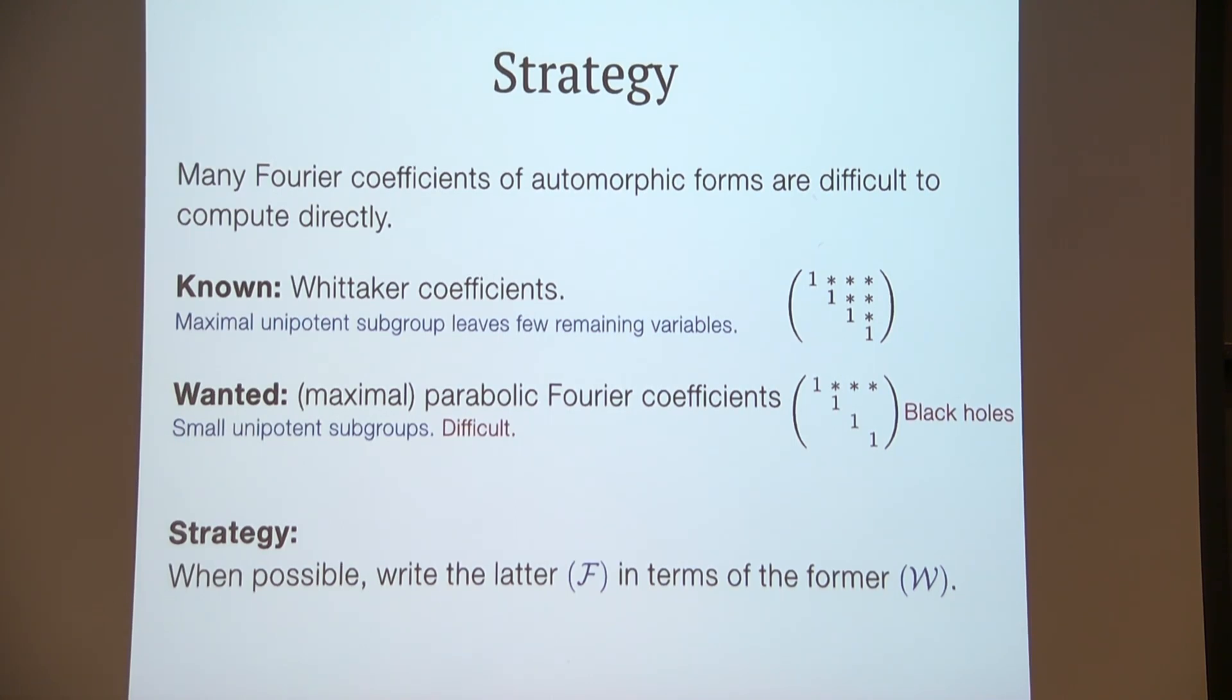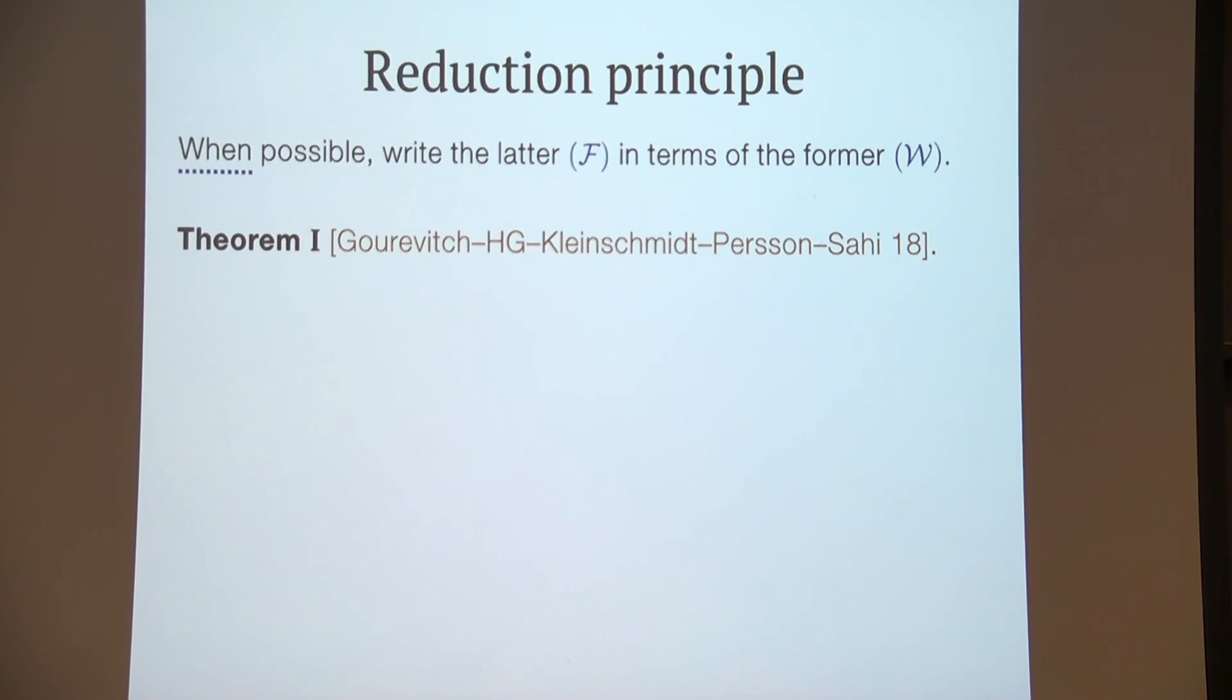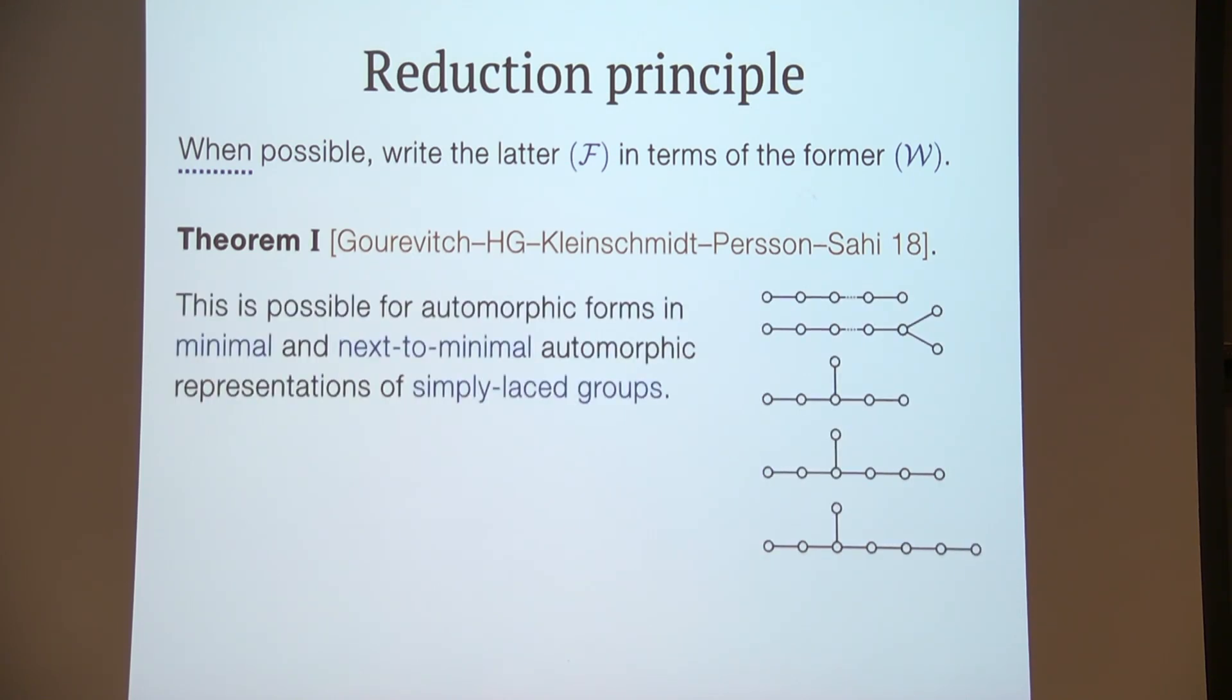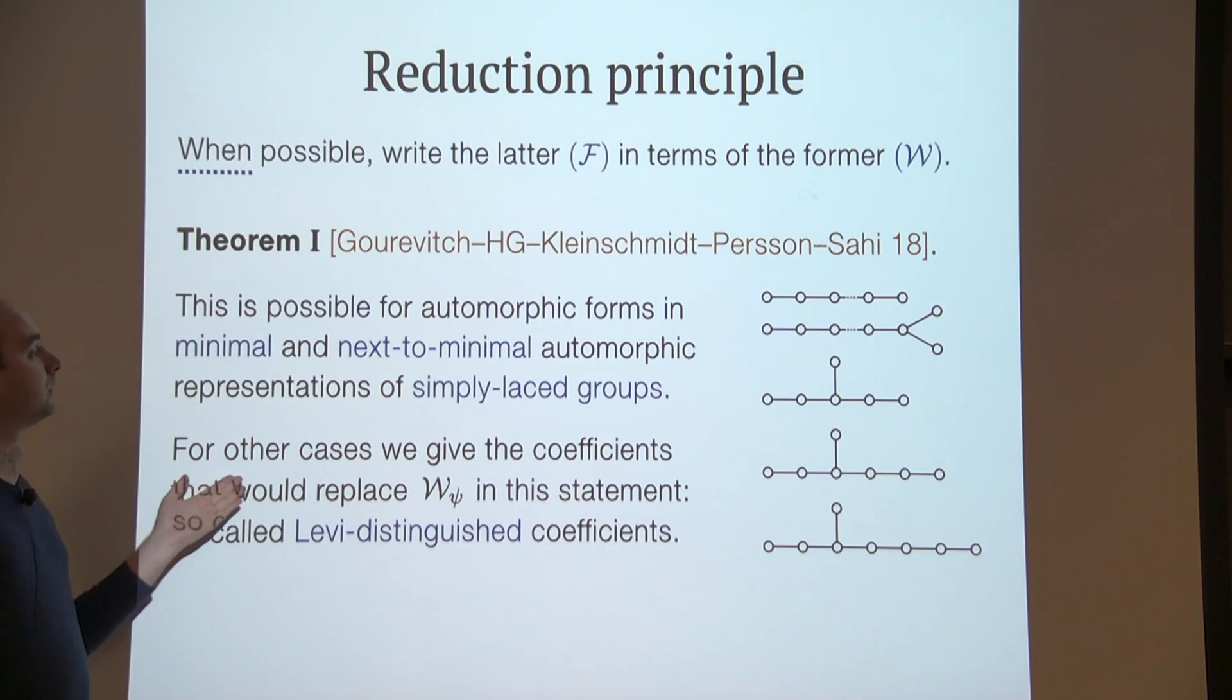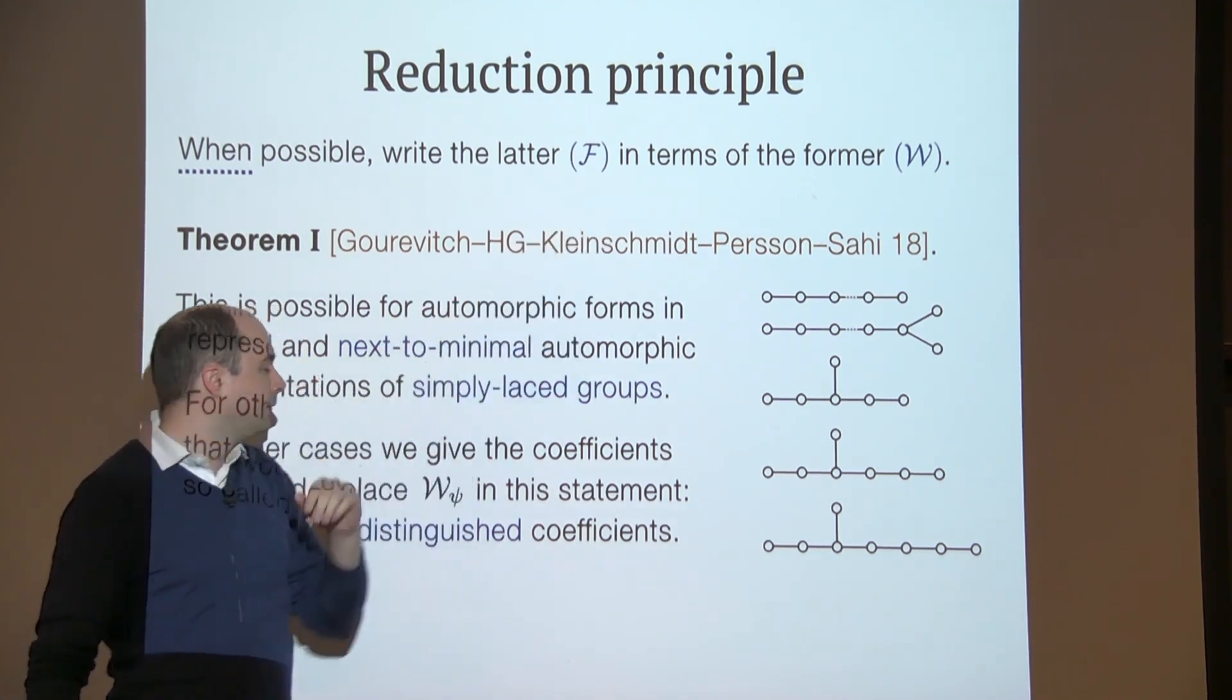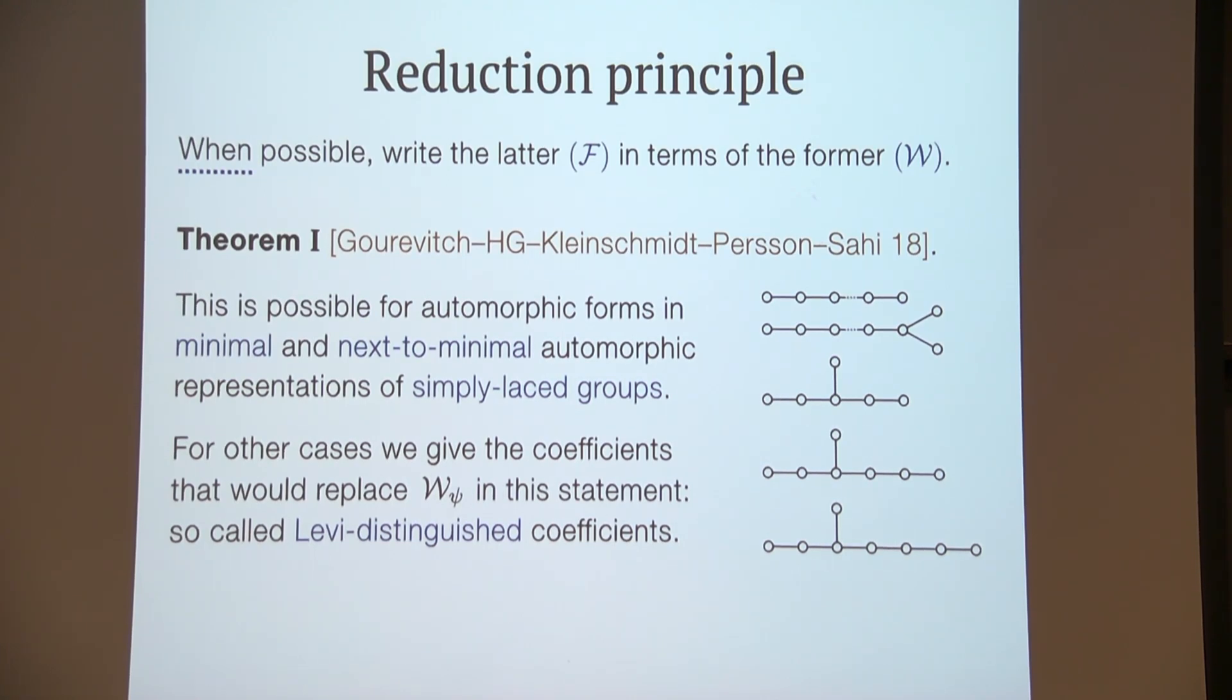But first we need to know when this is possible. And this is what we talk about in Theorem I of our paper from 2018. So here we show that it is possible exactly for those cases that we are interested in—so it's possible for the cases we are interested in from string theory. And for the other cases, we give the set of coefficients that would replace the W up here—so the set of coefficients we would need to be able to express parabolic Fourier coefficients—and they are called Levi-distinguished coefficients. What do I mean by 'other cases' here? Well, the setup is any number field, any central extension of reductive group, and any representation.